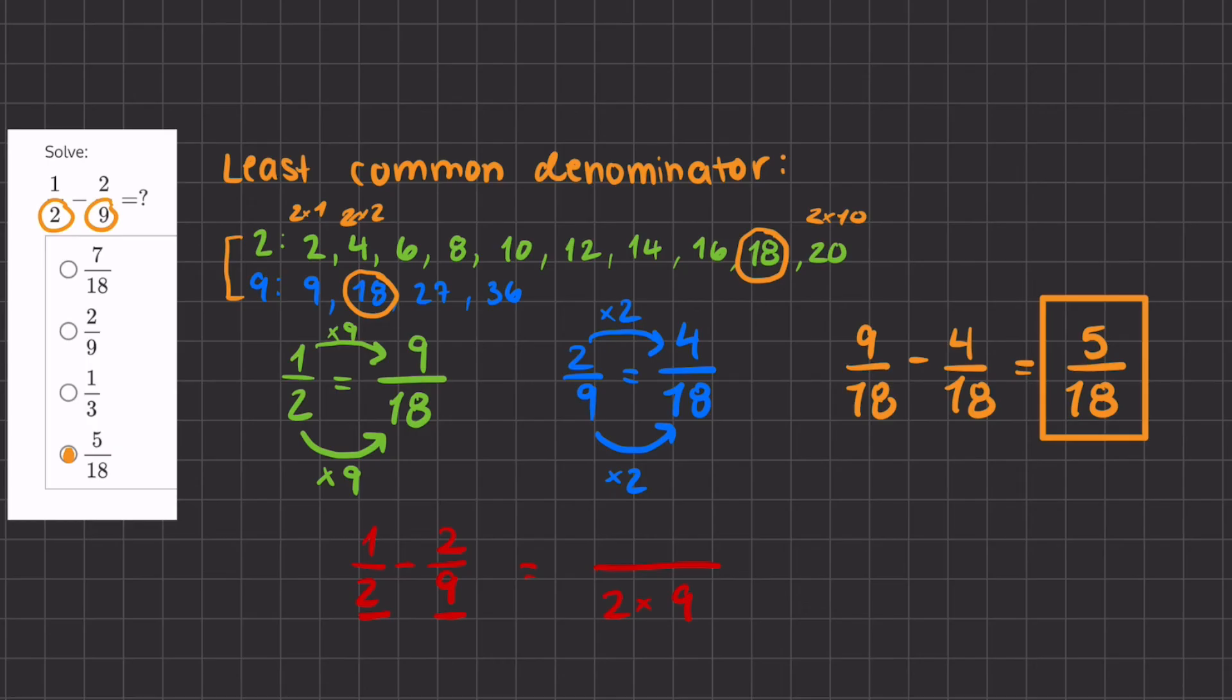Now the numerators, you'll multiply it by the opposite denominator. So I'll take 1, and I'll multiply it by 9. And I'll take 2, and I'll multiply it by 2. And don't forget to subtract both of the numbers.